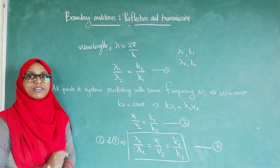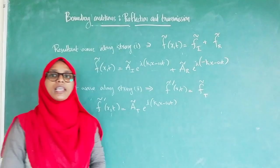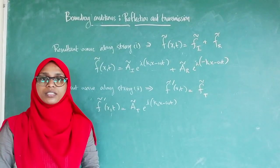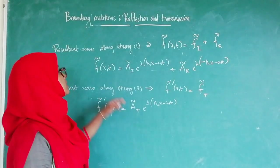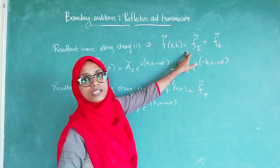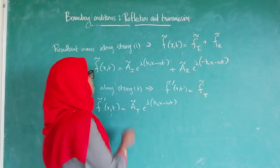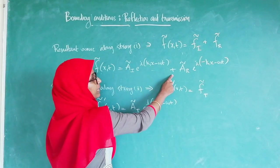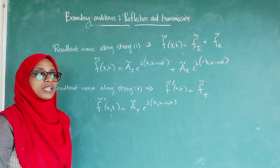For a sinusoidal wave traveling along a string, the net disturbance can be obtained using the principle of superposition. So the resultant wave along string 1 is F of X,t which is the sum of F_I and F_R. That is, F of X,t equals A_I times e raised to i(K1X minus omega t) plus A_R times e raised to i(minus K1X minus omega t) — equation 4.